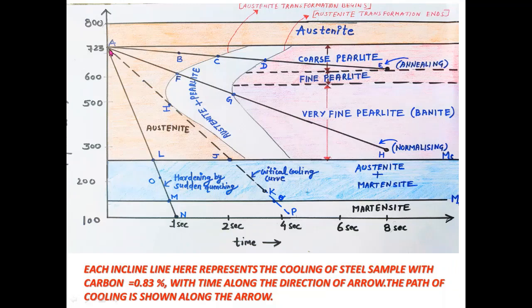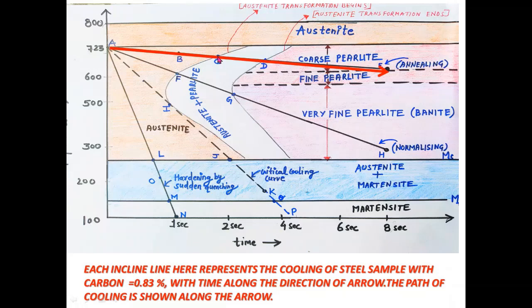We start cooling the sample at point A and decrease its temperature along path AE. The cooling rate along this path is 10 degrees Celsius per second. As we move along this arrow, we reach point B, which is lying in the orange region, so the microstructure at point B will be austenite. Moving further, we reach point C, which lies on the first C curve, so the transformation of austenite to pearlite starts at point C.